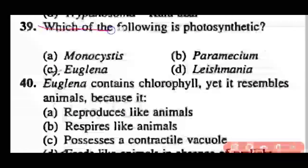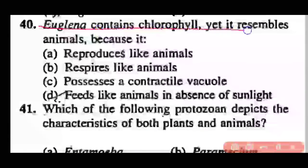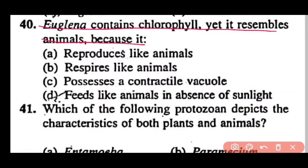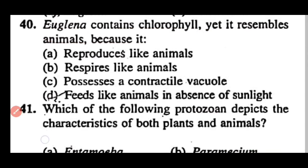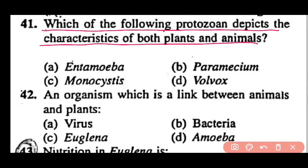Question 38: Select the matching pair — Plasmodium causes pyrexia, Leishmania causes dysentery, Giardia causes diarrhea, or Trypanosoma causes kala-azar? Correct answer is option C. Diarrhea is caused by Giardia. Question 39: Which of the following is photosynthetic — Monocystis, Paramecium, Euglena, or Leishmania? Correct answer is option C. Euglena is a photosynthetic protist. Question 40: Euglena contains chlorophyll yet resembles animals because it feeds like animals in the absence of sunlight. Correct answer is option D.